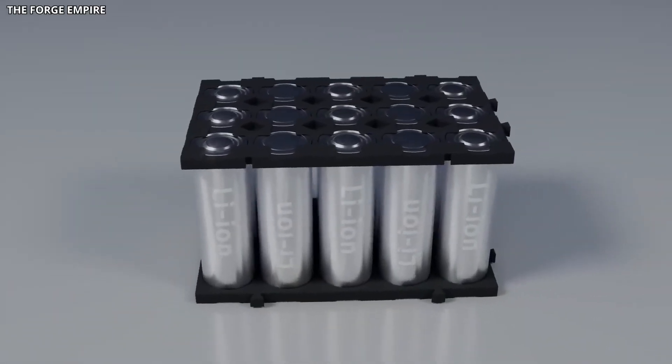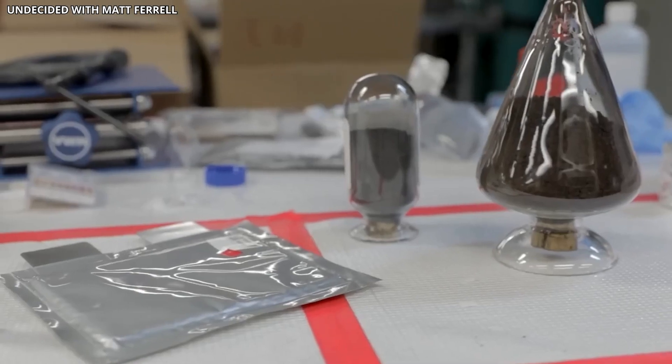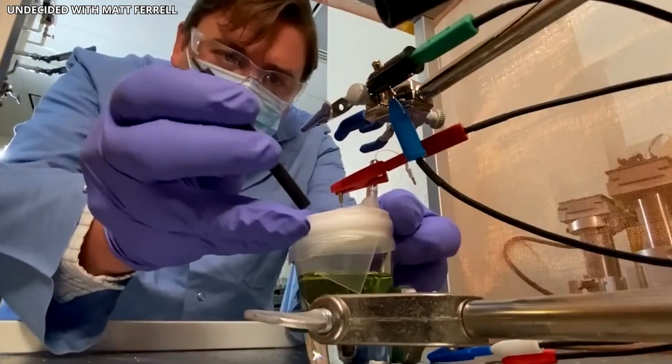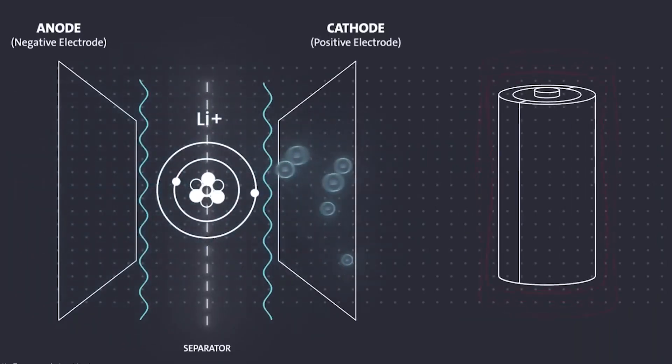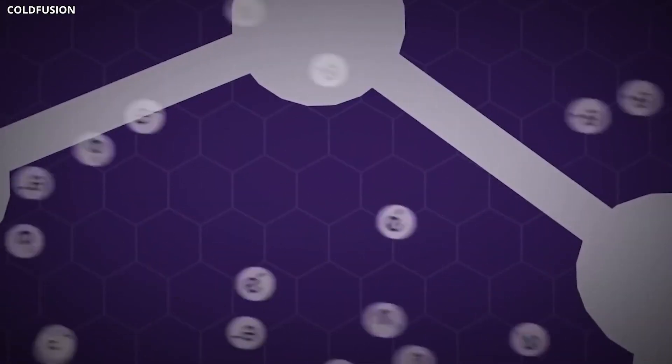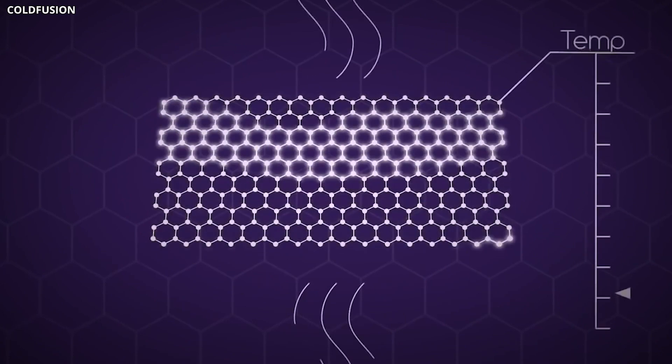The second breakthrough is stability. Researchers figured out how to coat graphene or modify its surface to prevent unwanted reactions with electrolytes. This solved one of the biggest degradation problems that plagued early prototypes. Batteries with these treated graphene components can now last thousands of cycles without significant capacity loss.